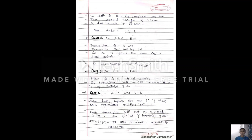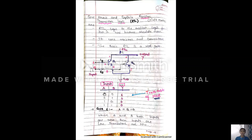To summarize: when both inputs are 0, both Q1 and Q2 are off (open switches), so VCC appears directly at terminal Y giving output 1. In all other cases at least one transistor is on, pulling the output to 0. This truth table corresponds to a NOR gate. So RTL is nothing but the NOR gate realization.